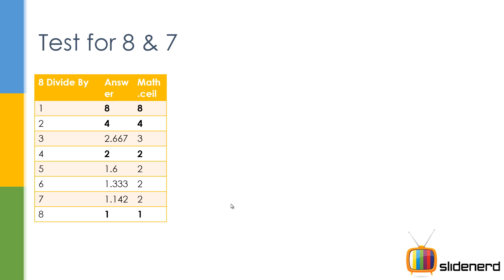So here what I have is this table. I have 8, and I am dividing it by everything from 1 to 8. I have that answer column where I'm putting the answer: 8 divided by 1 is 8, 8 divided by 2 is 4, 8 divided by 3 is 2.667, and so on. I am using something called Math.ceil. Math.ceil, as the name suggests, is a simple function that simply rounds up.